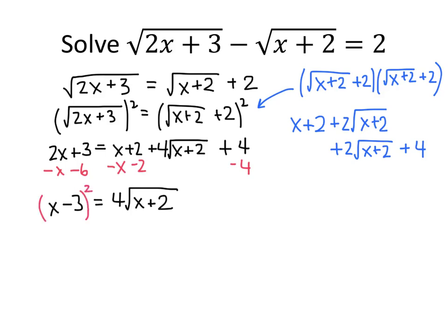So x minus 3 squared, 4 times the quantity x plus 2 squared. So on the left-hand side, once again we have to FOIL x minus 3 times x minus 3. I'm going to save you the trouble there, but go ahead and do it on your own if you want to practice. That works out to be x squared minus 6x plus 9. And on the right-hand side, when I square 4, I get 16. And when I square the square root of x plus 2, I just get x plus 2.